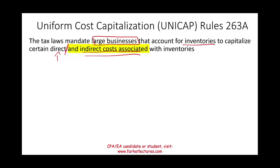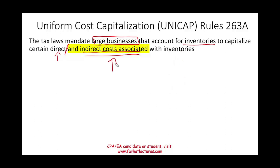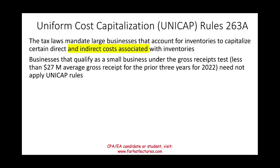We should be familiar with this if you studied financial accounting. We always capitalize costs directly associated with inventory, whether we are manufacturing that inventory or buying it. If we are buying it: the purchase price, cost of transportation, any necessary cost. If we are manufacturing: direct material, direct labor, manufacturing overhead. What's new about this concept is the indirect cost associated with inventory — that's going to be added to inventory.